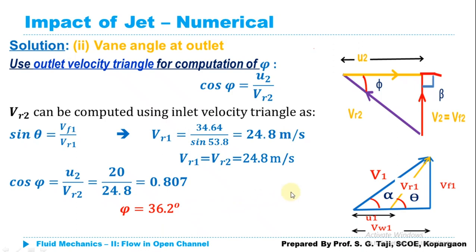Hope you understood this numerical and how easily you can calculate the required parameters. The key steps are: write down all given data, draw inlet and outlet velocity triangles carefully, and note what angle data is given and with respect to what. In this numerical, the angle of deflection was measured at the outlet as 90°, giving beta = 90°, which eliminated the need for the sine rule to compute phi. The remaining numerical problems will be discussed in the next lecture. Thank you for watching.